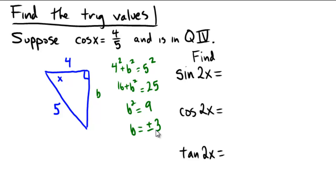Now normally we'd say lengths are positive, right? But notice that this is down because it's in quadrant 4. So we are literally going to take the b equal to the negative 3 in this particular diagram.